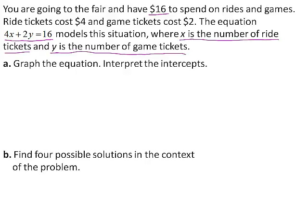Part A, graph the equation and interpret the intercepts. To find the x-intercept, substitute 0 for y and solve for x. Substituting 0 for y gives 4x plus 2 times 0 equals 16, which simplifies to x equals 4.